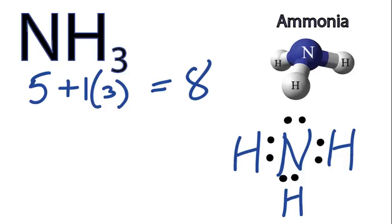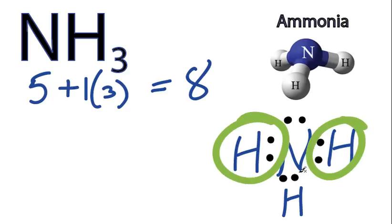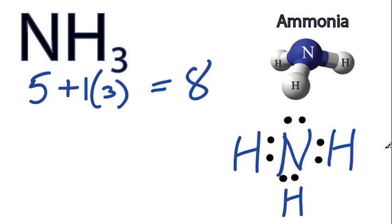And now, if you take a look, you can see that nitrogen has 8 valence electrons, its octet is full, and each of the hydrogens has 2 valence electrons. So we're good. That's the Lewis structure for NH3.